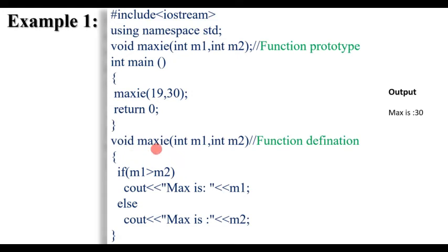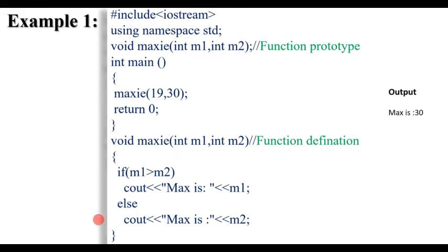We have the function definition: maxi with int M1 and int M2. This is the body of the function. If M1 is greater than M2, then maxi is M1; otherwise maxi is M2. This is the function definition where the specific task is executed.